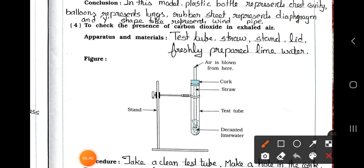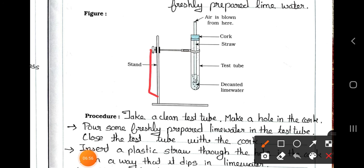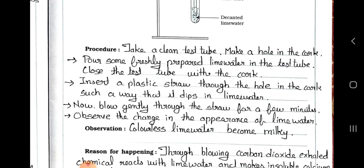Now see number 4: To check the presence of carbon dioxide in exhaled air. Apparatus and materials: test tube, straw, stand, lid, freshly prepared lime water. See the figure now. Here is the stand, and here tied the test tube. In that, straw is there. Cork is there. Air is blown from here and here, decanted lime water. See the procedure. Take a clean test tube. Make a hole in the cork. Pour some freshly prepared lime water in the test tube. Close the test tube with the cork.